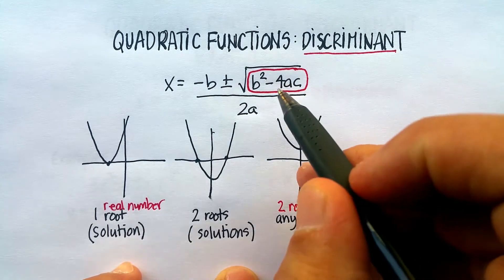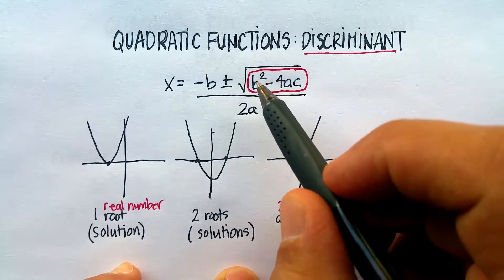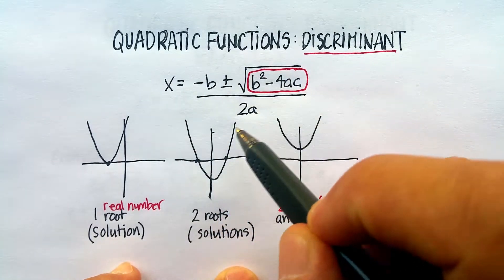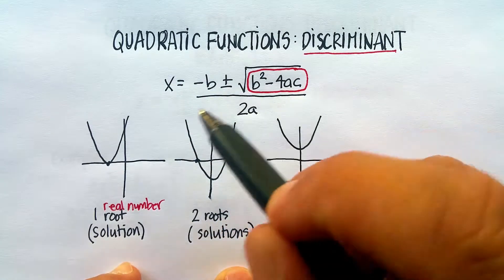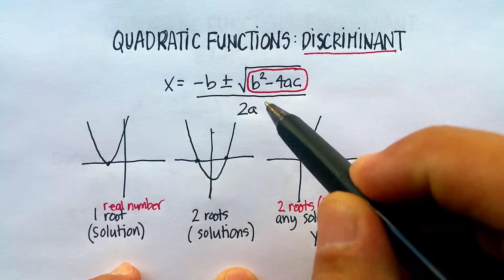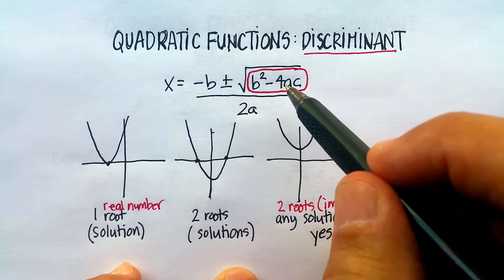Now the discriminant, if you remember in this previous video, is just this portion right here in the quadratic formula. Now the quadratic formula will solve for the actual numbers or the coordinates of where it crosses the x-axis. But this b squared minus 4ac,